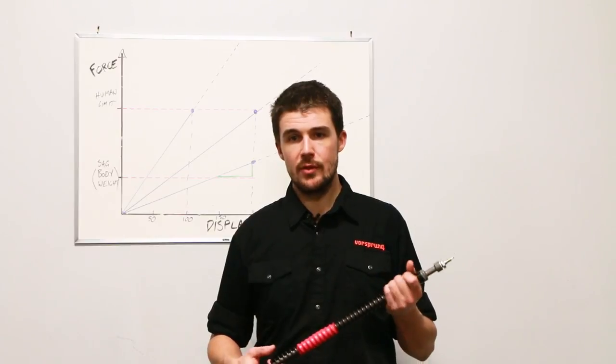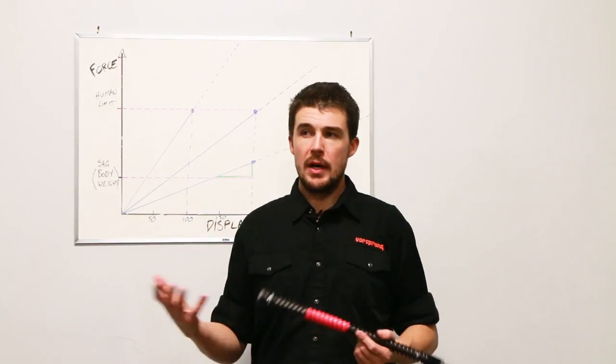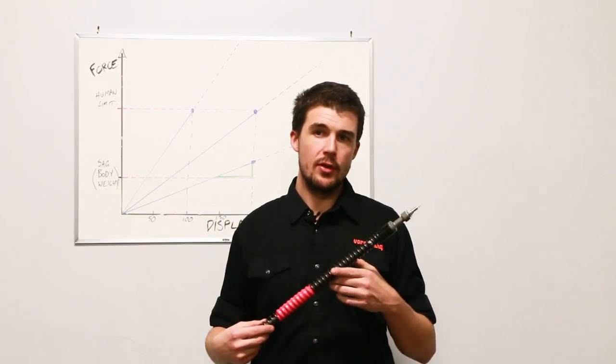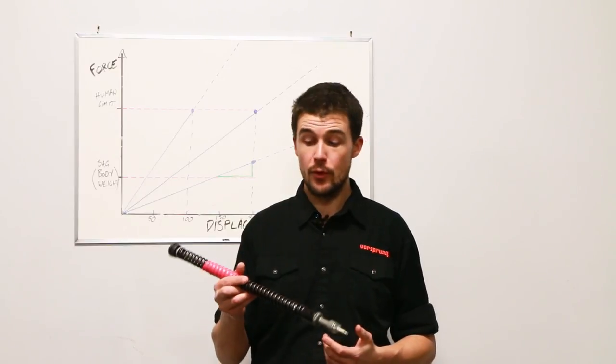So with a coil spring the advantages are in the first two-thirds of the travel where you have something that is much more consistent in terms of spring rate. So it's softer in the very first part of the travel and it's firmer in the middle of the travel. Unfortunately it's also softer again at the end relative to an air spring because the air springs are able to ramp up.